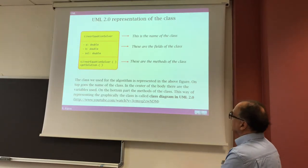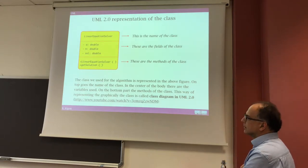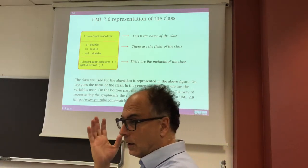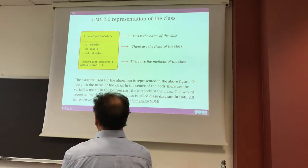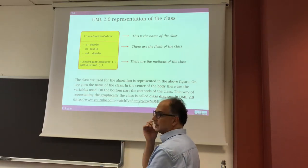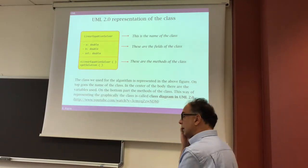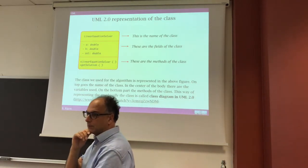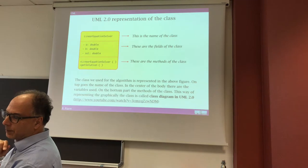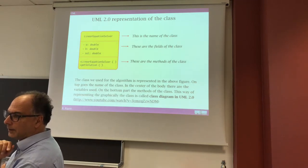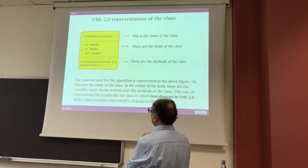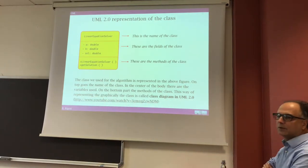Here we have a few classes, and we can represent the classes like this, with this square divided in three parts. On the top there is the name of the class. In the middle there are the fields of the class. The fields are anticipated by a minus sign, meaning that the fields are private. And the fields are double precision numbers in this case.